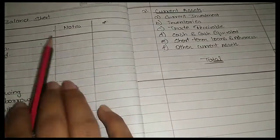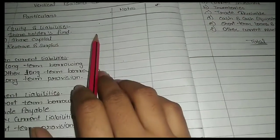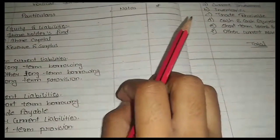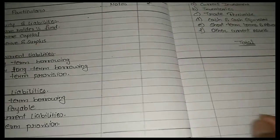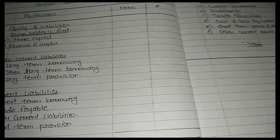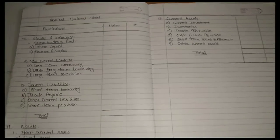Short-term loans and advances, other current assets. Two columns are rupees and notes. If anything is capital reserve or share capital reserve, you will calculate in one place and show note number, working note.